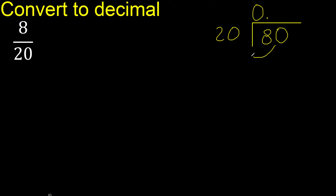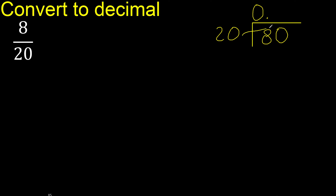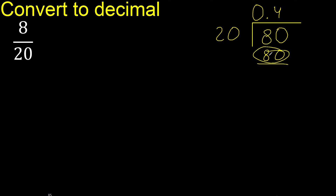80 is not less than 20, therefore find which number multiplied by 20 is nearest to 80 and not greater. Multiply by 5 is 100 — 100 is greater. Therefore multiply by 4 is 80 — not greater. The nearest number; subtract: the result is 0.